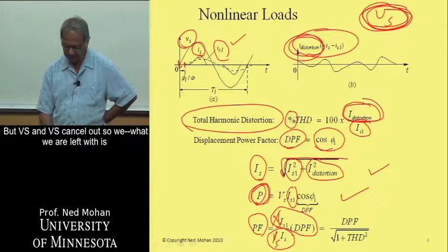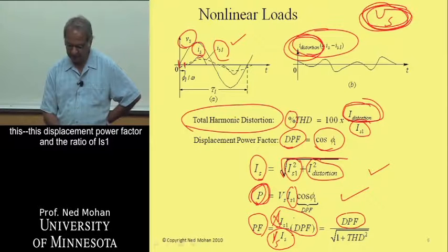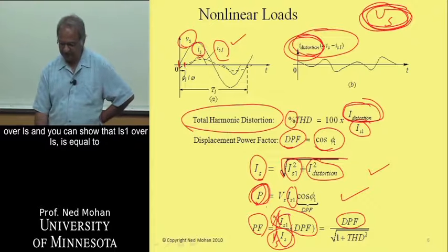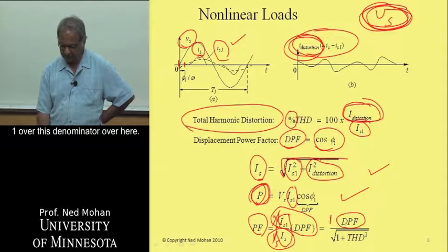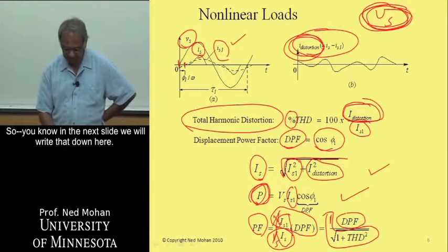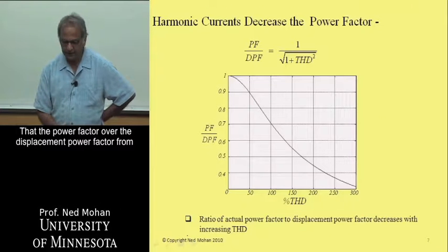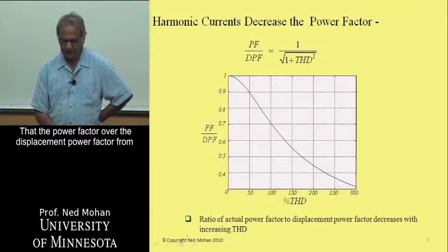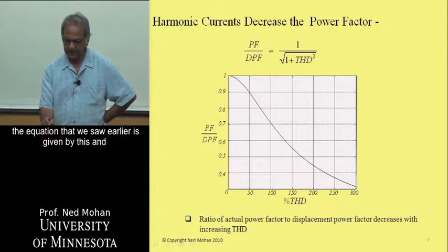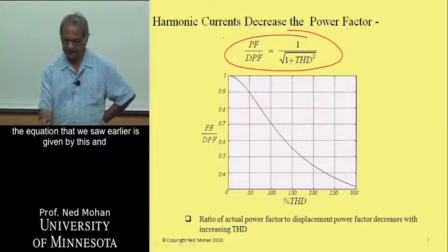So what we are left with is this displacement power factor and the ratio of IS1 over IS. And you can show that IS1 over IS is equal to 1 over this denominator over here. So in the next slide, we will write that down here.